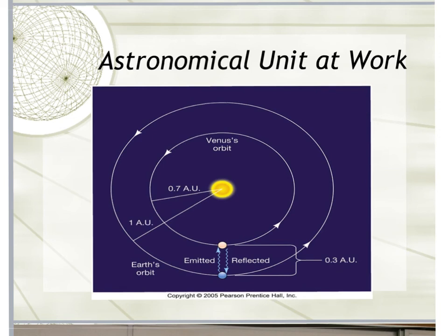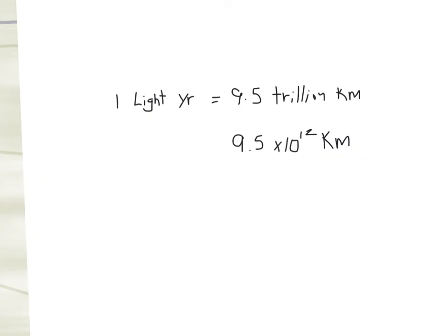You've likely heard of light years, which is another way to talk about distances in space. One light year is equal to 9.5 trillion kilometers. Recall that 1 AU is equal to 150 million kilometers. So which one is bigger — the light year or the astronomical unit? The light year is bigger because trillion is much larger than million.